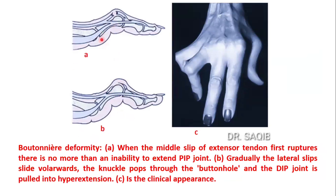In diagram A, when the middle slip of the extensor tendon first ruptures, there is no more than an inability to extend the proximal interphalangeal joint. Gradually the lateral slips slide volarwards, that is towards the palmar side. The knuckle pops through the buttonhole and the distal interphalangeal joint is pulled into hyperextension.